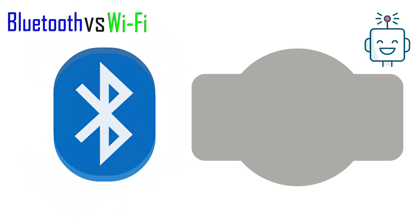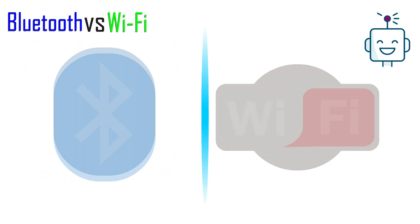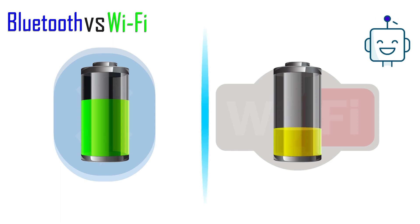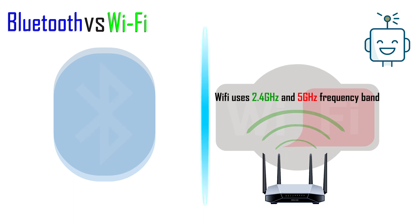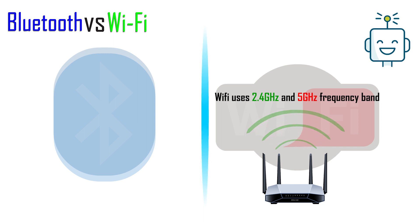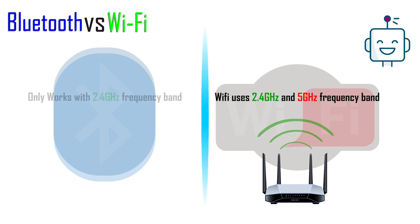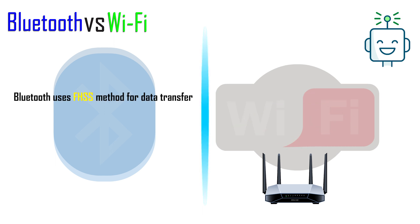So, what is the difference between Bluetooth and Wi-Fi? Bluetooth devices consume less battery compared to devices connected to Wi-Fi. Wi-Fi uses 2.4 GHz and 5 GHz frequency bands to connect devices to the local area network and wide area network (the Internet), while Bluetooth only works with 2.4 GHz. Bluetooth uses the FHSS method to communicate, whereas Wi-Fi uses a protocol called IEEE 802.11.